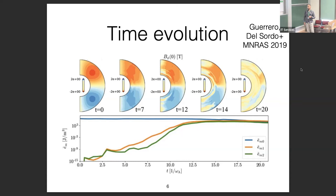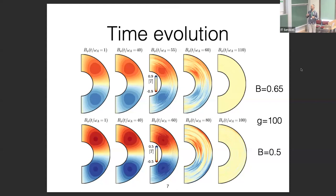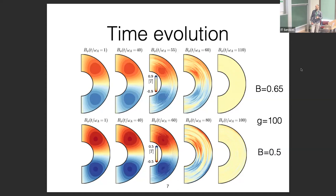We then start changing parameters, looking at the role of magnetic field initial strength. Keeping gravity constant but changing the initial field strength, we see different behavior — the field configuration is stable for a bit longer. We also see the occurrence of radial modes when gravity is increased to a certain value, which is somewhat expected for Tayler instability. The simulations are run for quite long Alfvén travel times.